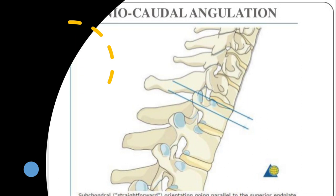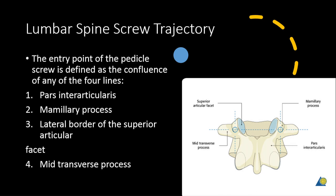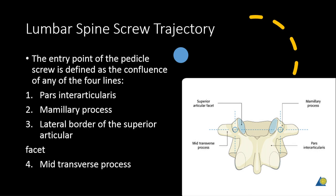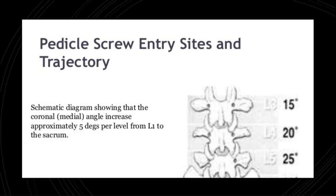In the lumbar spine, you have landmarks of the pars inter-articularis. An additional important landmark is the mammillary process, which comes from the superior articular facet - that becomes a very important point because you can ronger the mammillary process and directly enter it for open techniques. The trajectory increases from L1 to L5 - at L3 it is around 15 degrees, at L5 it becomes 25 degrees. Remember the trajectories and how medial you have to be; if you have this information in your mind it helps with planning your pedicle screw placements.